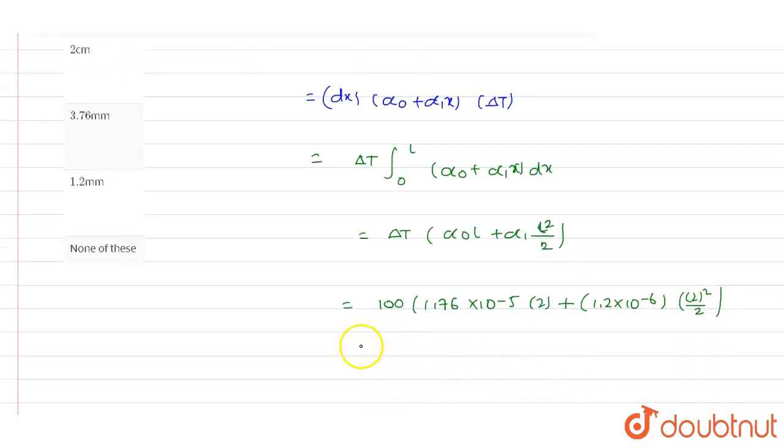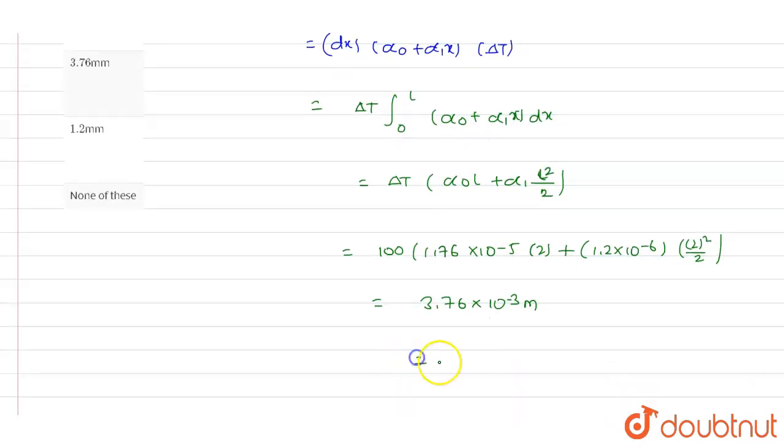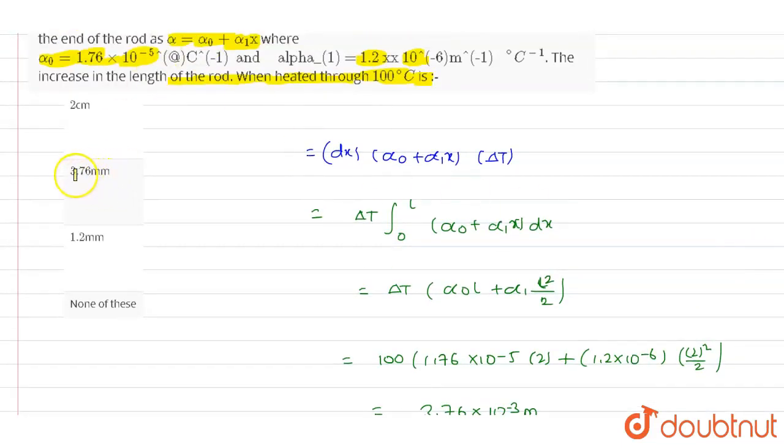So by simplifying this equation, we will get the value 3.76 into 10 power minus 3 meters. So we can also write this value as 3.76 millimeters. Out of these four options, if you see, we have option B as 3.76 millimeters, so option B is the correct answer for this question. Thank you.